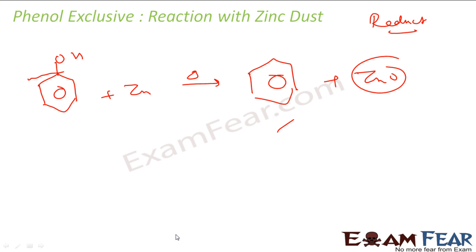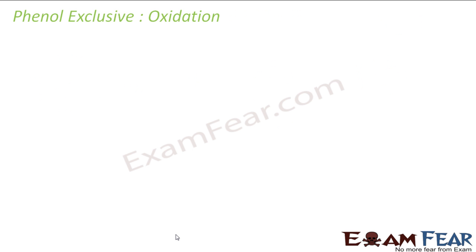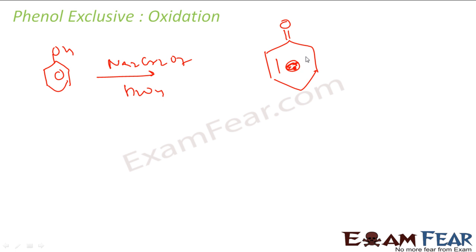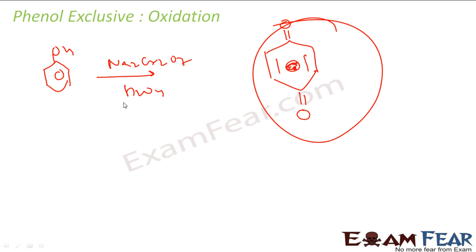Now let's see the oxidation reaction. I don't have the mechanism for this one. Phenol reacts with Na2Cr2O7 and sulfuric acid — it will give benzoquinone. This is an unstable product — yes, this is benzoquinone.